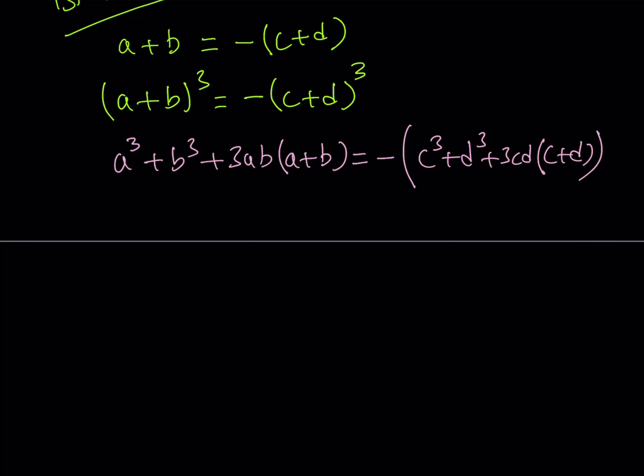Now I can go ahead and put everything on the same side and then try to simplify that expression. I'm going to get A cubed plus B cubed plus 3AB times the quantity A plus B plus C cubed plus D cubed plus 3CD times the quantity C plus D equals 0.